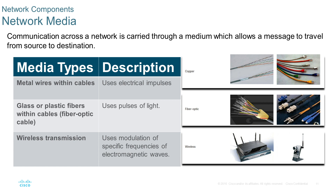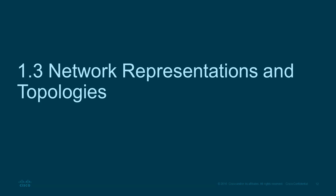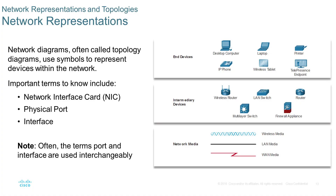We also have cables that make networking possible. These cables are metal wires; they are also fiber optic glass or plastic fibers. We also have wireless transmission. We have some network representations and topologies — given to you as computers, intermediary devices (mainly routers and switches), and cables.